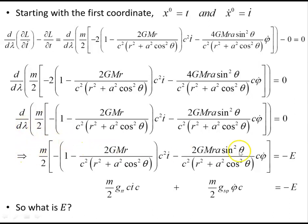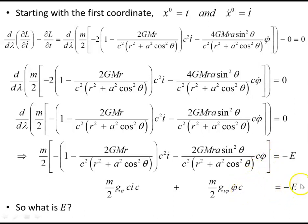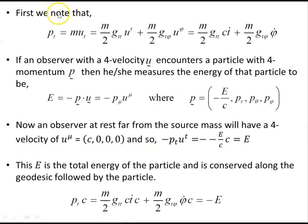We've integrated both sides, so the derivative is gone and the argument equals a constant, which we call −E. This can be summarized as (m/2) g_tt (cṫ)·c + (m/2) g_tφ φ̇·c = −E. The covariant component of momentum p_t = m u_t = (m/2) g_tt u_t + (m/2) g_tφ u_φ = (m/2) g_tt cṫ + (m/2) g_tφ φ̇.